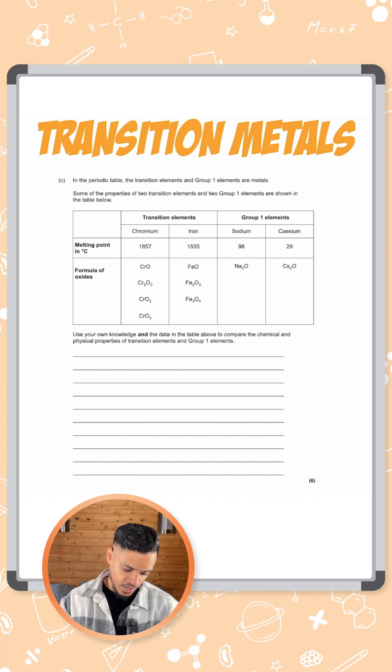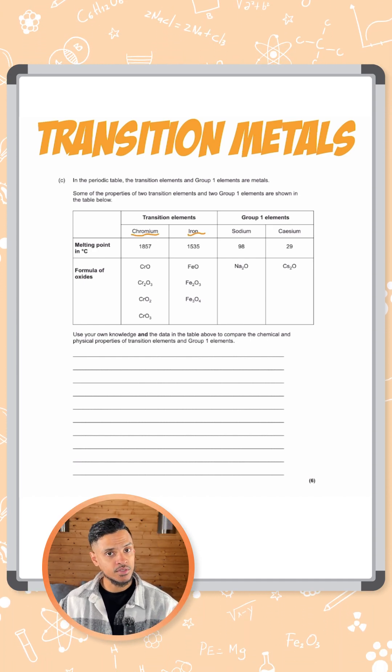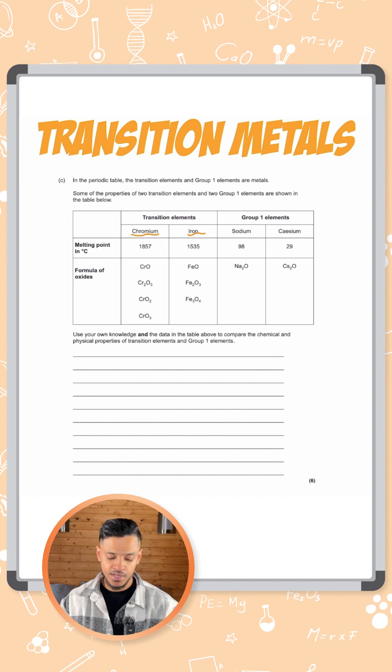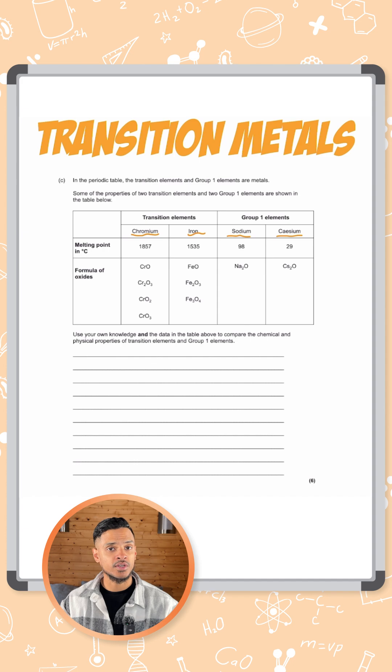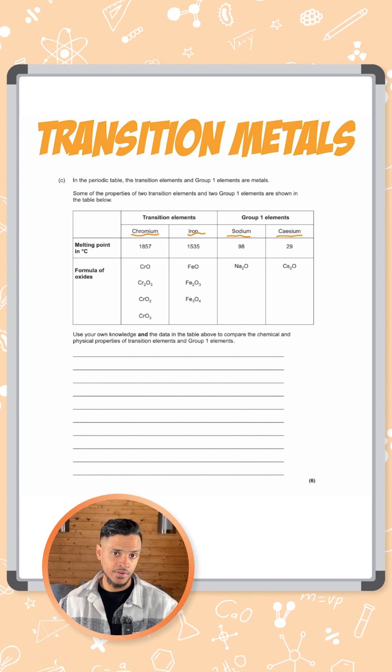So we're talking about chromium, iron which are two transition metals. You'll find them in the middle of the periodic table and then we've got sodium and cesium which are both found in group one. So on the far left of the periodic table.